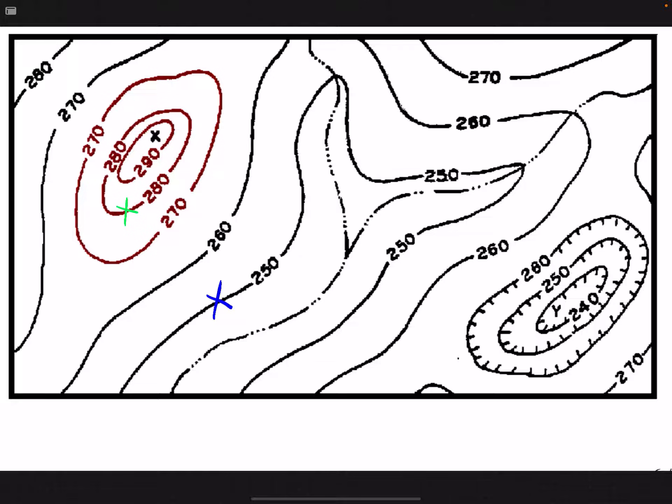So our highest elevation is the green X, which is at 280 meters.